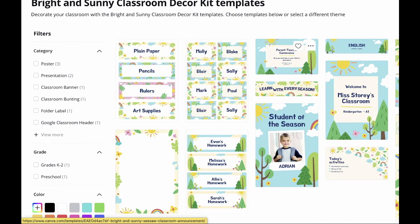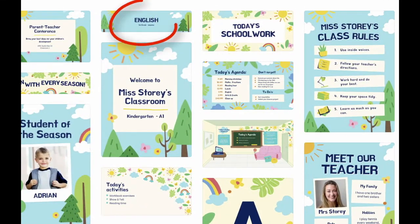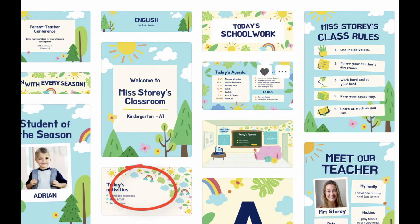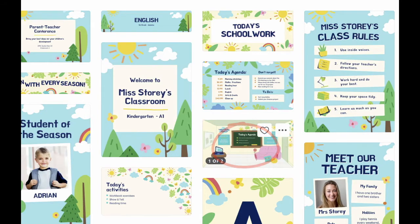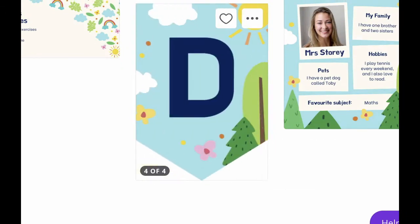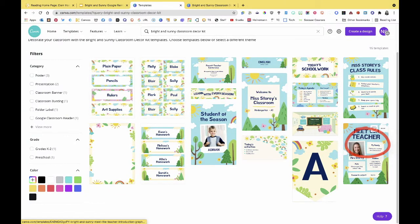You've got different ones with different shapes and sizes: a folder label, a classroom announcement for Seesaw, a banner you can use for the tops of Canvas pages, a featured student poster, a Google Classroom header, a classroom door poster, an agenda classroom display, a Microsoft Teams background, a daily agenda slide, a class rules template, a virtual classroom template, and a bunting option.